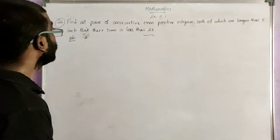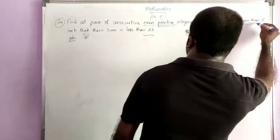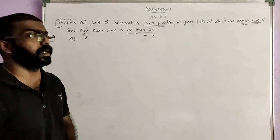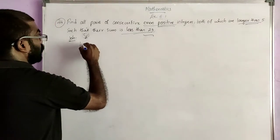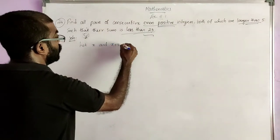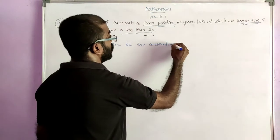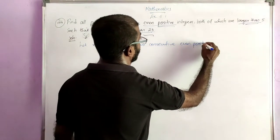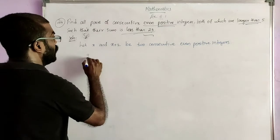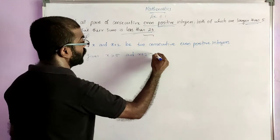The next question: find all pairs of consecutive even positive integers, both of which are larger than 5, such that their sum is less than 23. Here we can proceed as in the previous question. Let the consecutive even positive integers be X and X plus 2. Both of which are larger than 5, so we can write: X is greater than 5 and X plus 2 is also greater than 5.